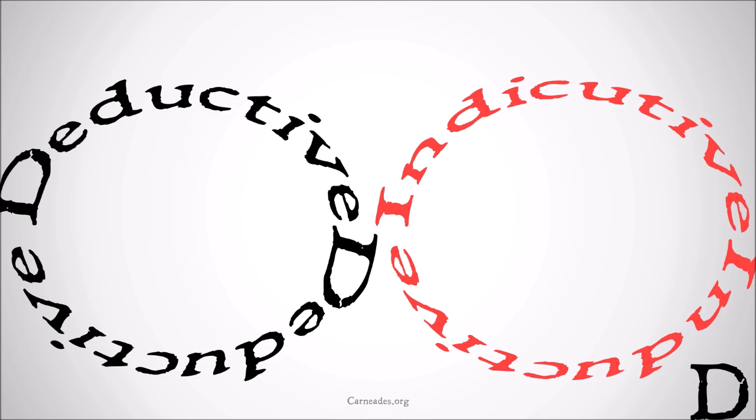There are two types of arguments broadly: deductive and inductive. You can have abductive arguments — they kind of fit within the realm of inductive arguments, but we're setting those aside for now. Deductive arguments are arguments whose premises claim that the conclusion must be true if the premises are true, whereas inductive arguments claim that the truth of the premises simply lends support or increases the likelihood of the conclusion.